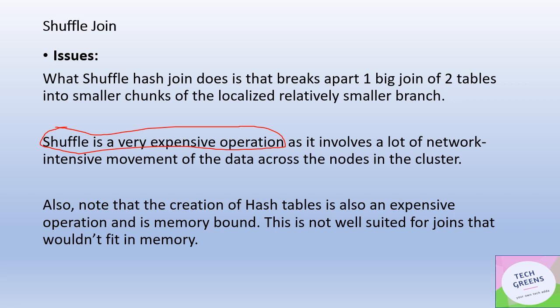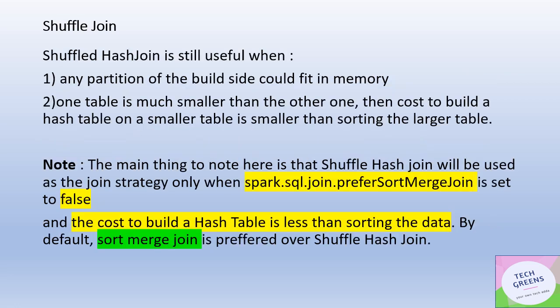There are certain issues with shuffle hash join. First, the shuffle itself is an expensive, network-intensive operation that consumes significant bandwidth. Second, creating hash tables from the build side is memory-bound and takes a lot of memory. If the two sides cannot fit into memory, it results in spills, which slow down hash table creation and increase overall time. Shuffle hash join works best when any partition of the build side can fit into memory.